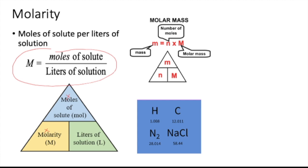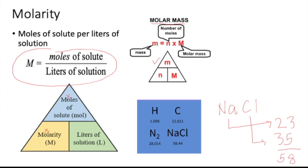An important concept is knowing how to compute for the molar mass. You need the mass of the given compound and the number of moles. For example, for NaCl: sodium is approximately 23 and chlorine is approximately 35 from the periodic table. Adding the two together, the molar mass of sodium chloride is 58.44 grams per mole.